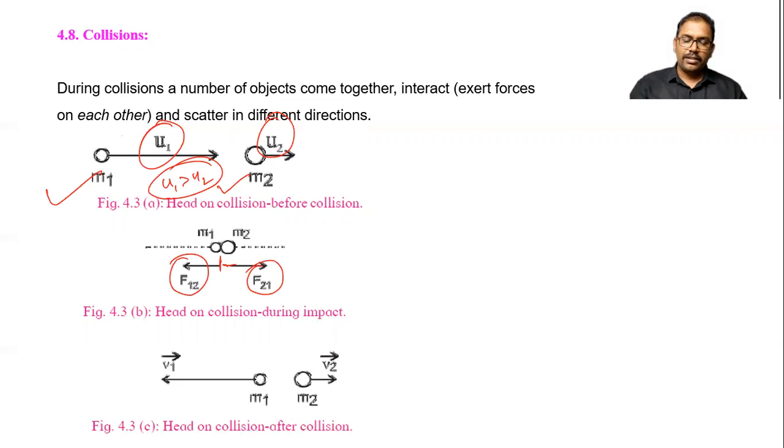Then after that, they scatter in different directions with different velocity or the final velocity. You can see in the third diagram. Now, in this case also, momentum is constant. Linear momentum is constant.